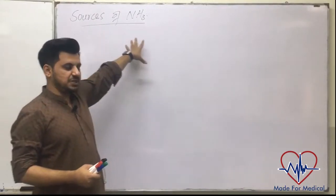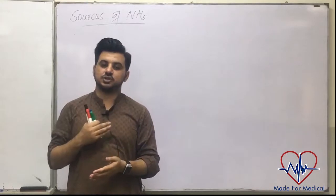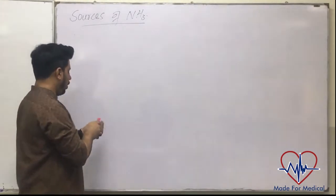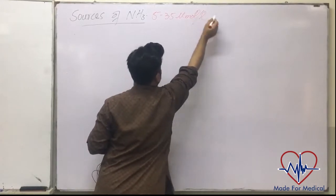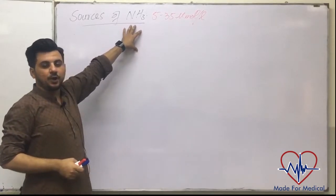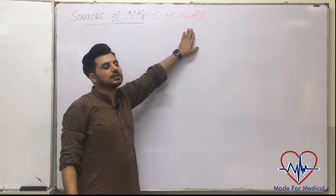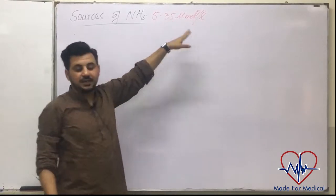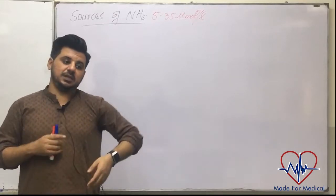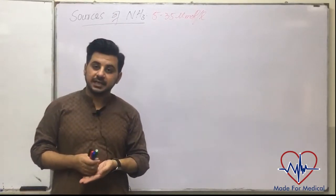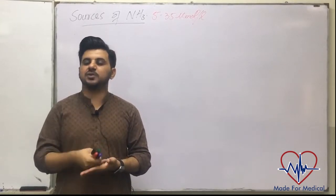Ammonia is majorly produced by the metabolism of amino acids, and its concentration must be controlled in our blood. The normal range of ammonia is 5 to 35 micromoles per litre. If the concentration of ammonia exceeds this range, it becomes toxic to the body, especially for the central nervous system, and can result in several complications including death.